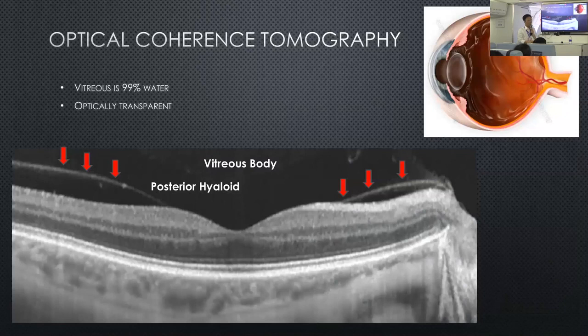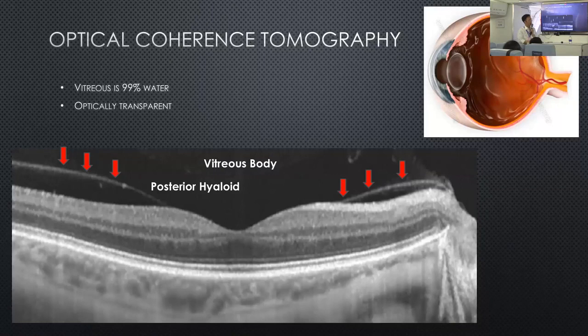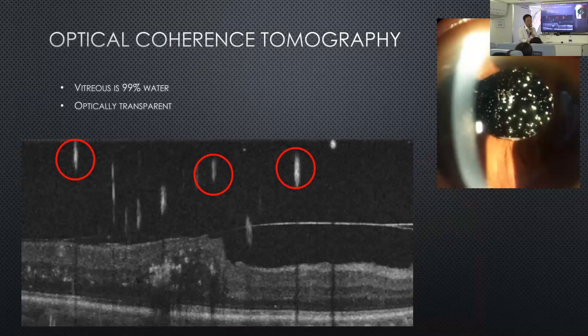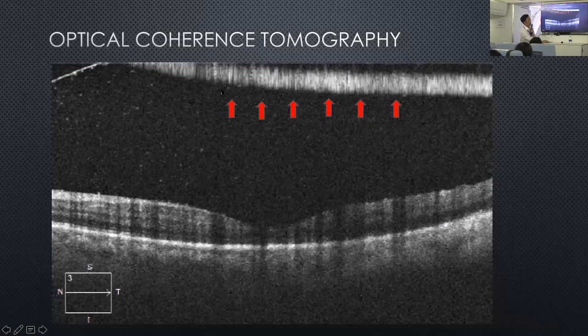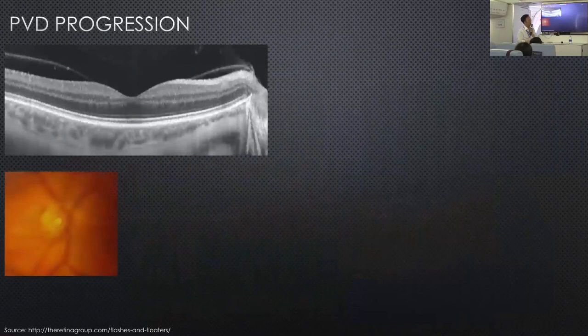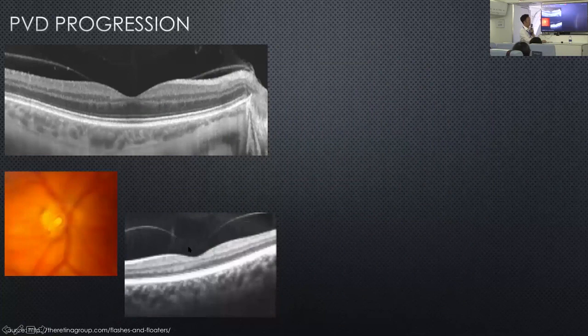We can look at the cross-section from the vitreous all the way down to the retina. There can be something within the vitreous — like calcium deposits of asteroid hyalosis, as in this case — and you can also see a dense hyaloid with blood. Sometimes the vitreous is trying to pull away and the entire hyaloid can be easily seen on the images.